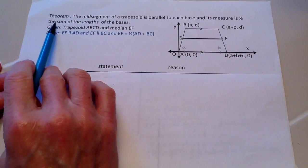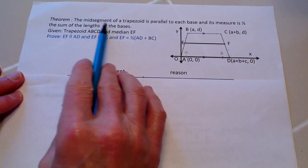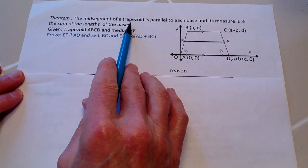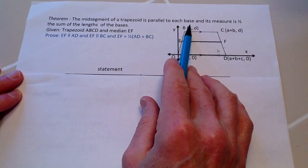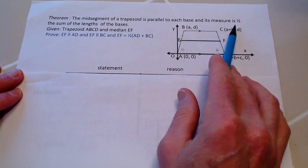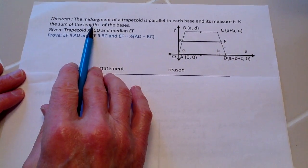We are going to prove the theorem about the midsegment of a trapezoid is parallel to each base and its measure is one-half the sum of the lengths of the bases.